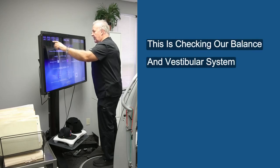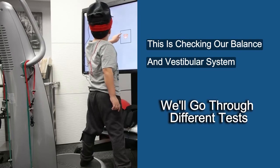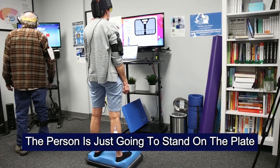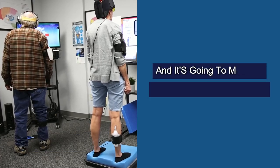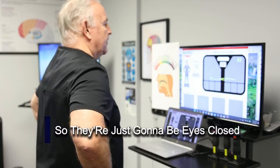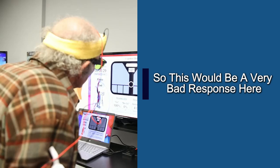So again, this is checking our balance and vestibular system. We'll go through different tests. So this first test is the person is just going to stand on the plate, and it's going to measure how much sway they have. So they're just going to be eyes closed. So this would be a very bad response here.